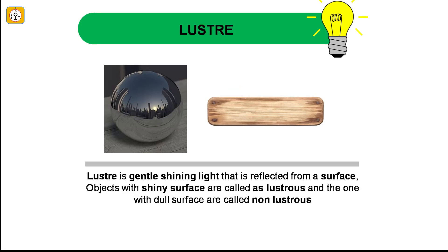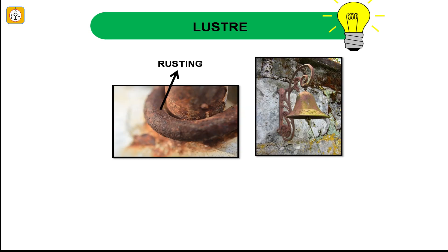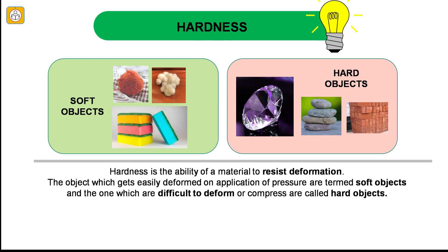Lustre is a gentle shining light that is reflected from a surface. Objects with shiny surfaces are called lustrous and the one with dull surfaces, which do not reflect light, are called non-lustrous. The picture shows lustrous metallic ball and non-lustrous wood. Most of the metals are lustrous but their surface usually lose shine because of the reaction of the surface with air which is also called rusting as shown in the picture.